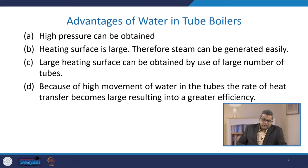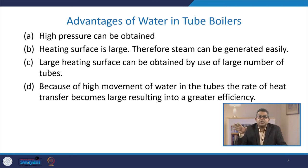There are certain advantages associated with water-in-tube type boilers. You can obtain high pressure. The heating surface is quite large, therefore steam can be generated easily. A large heating surface area can be obtained by using a large number of tubes, which you can embed accordingly. Due to the high movement of water in tube, the rate of heat transfer becomes large, resulting in greater efficiency.